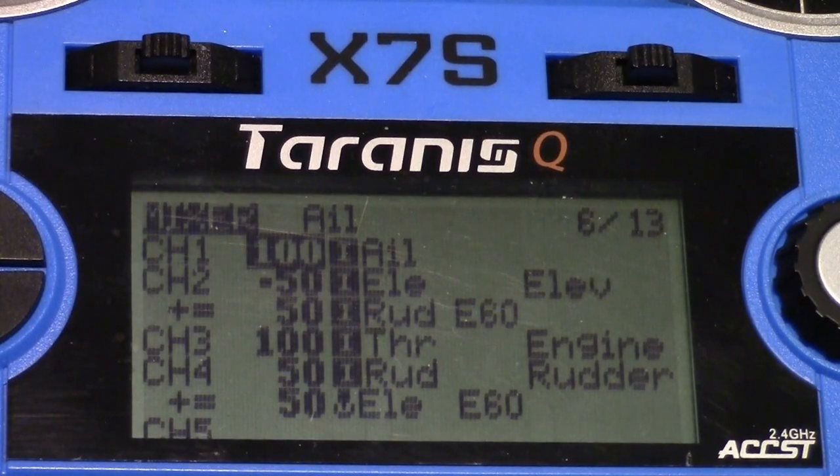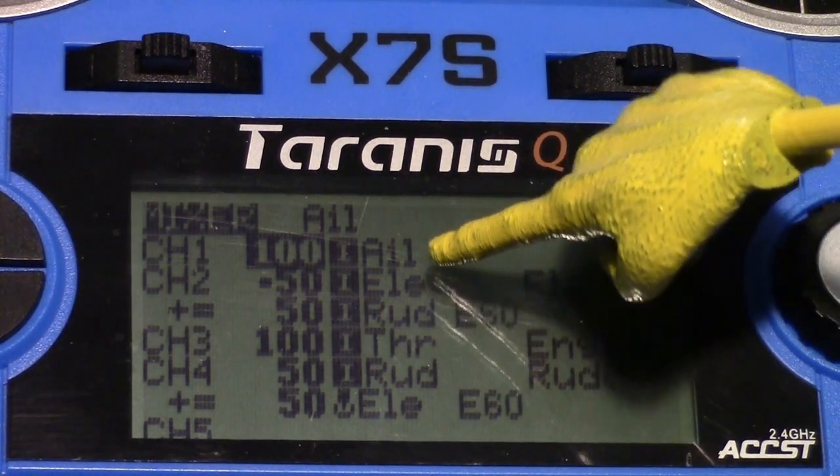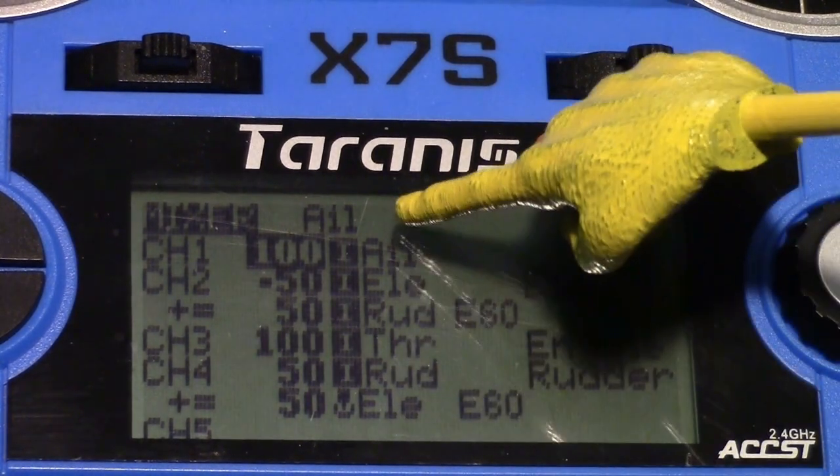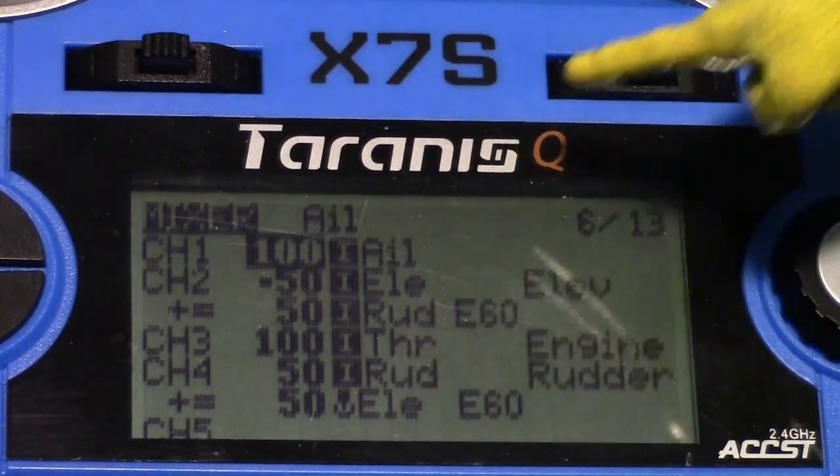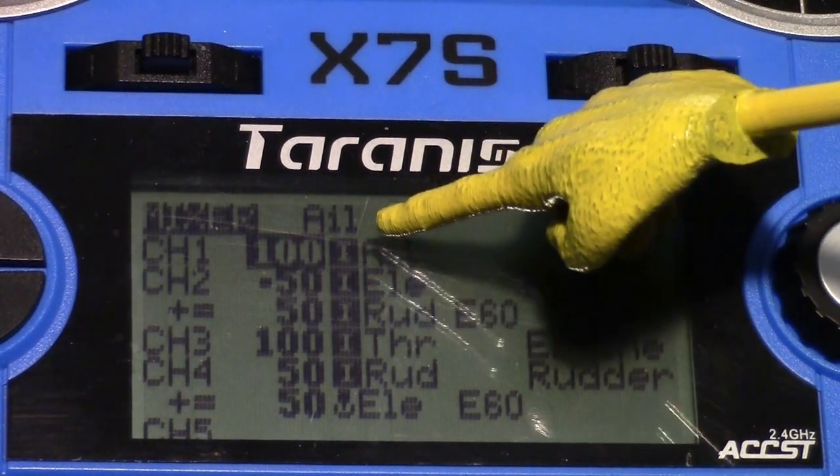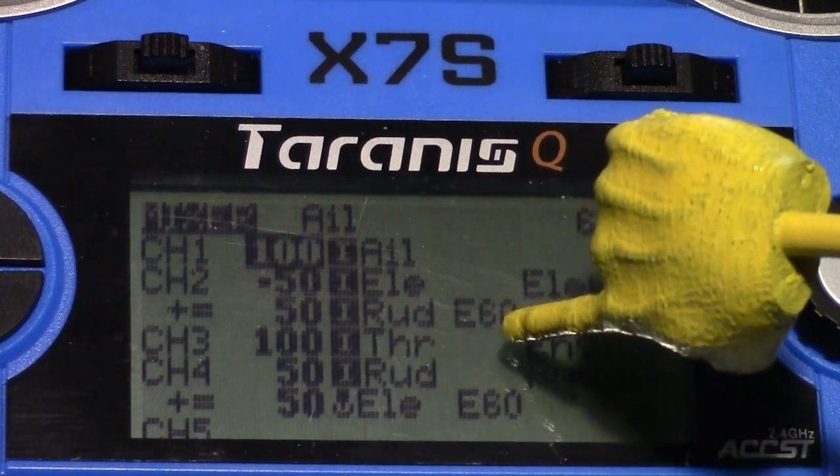Here's the setup on the mixer page on my Taranis radio. And you can see I have the V-tail elevator and rudder split 50-50 right there. And then the ailerons are right at the top here on channel one. And the throttle is on channel three.